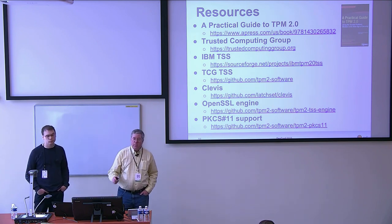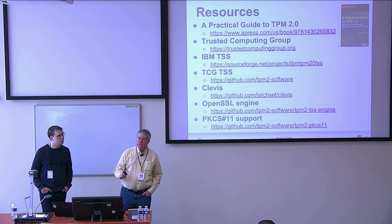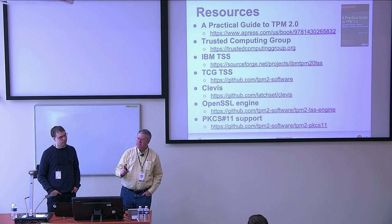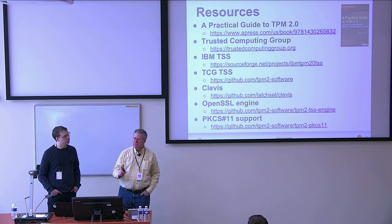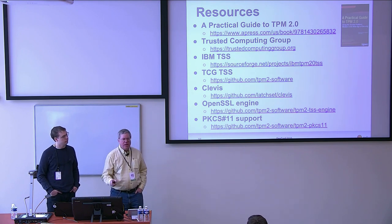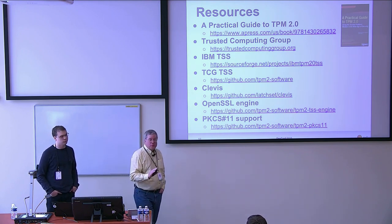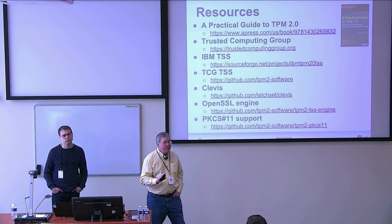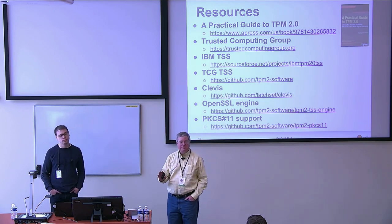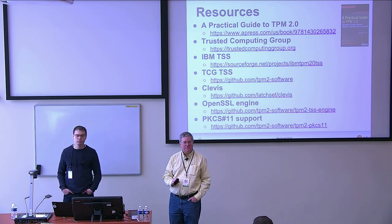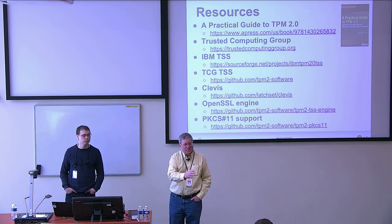By incredible coincidence, as the out-of-time sign came up, we got to the point of: a really good starting point if you want to know the details is 'A Practical Guide to TPM 2.0' — a 250-page book available as a free electronic book from Apress. There's more information from the Trusted Computing Group, the user space tools for IBM and TCG, Clevis and the network-bound disk encryption work, and the work going on with OpenSSL and PKCS11. Do you have any questions, comments, or feedback?